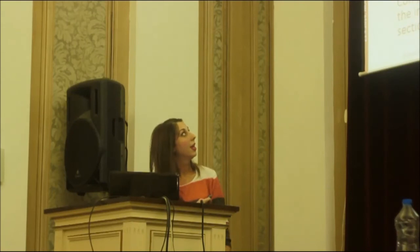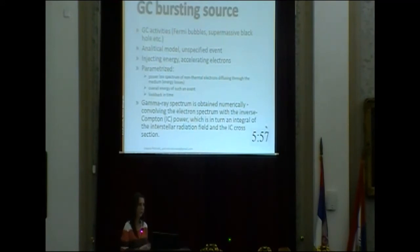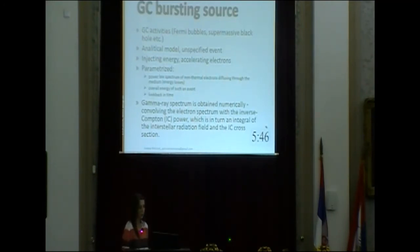We parametrize the event and say that it injects energy and accelerates electrons. We need a source that provides a power-law spectrum of non-thermal electrons that then diffuse through the medium and lose their energy through different channels — through inverse Compton radiation and through bremsstrahlung. What we calculate is the overall energy of such an event, checking whether it could produce enough energy to explain the GC excess. We also look back in time to search for a specific point when such an event could have happened and could explain what we see today. We get the gamma-ray spectrum numerically by convolving the electron spectrum with the inverse Compton power, which is an integral of the interstellar radiation field and the IC cross-section.